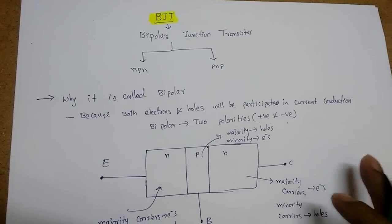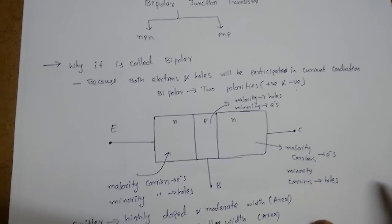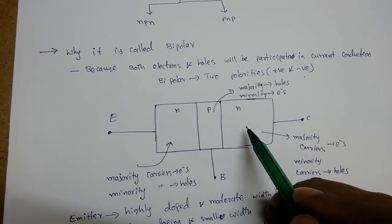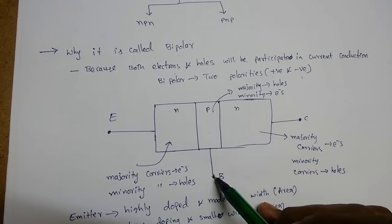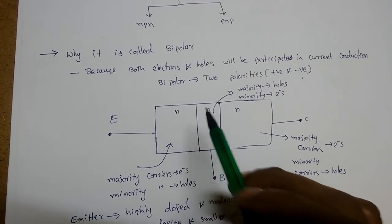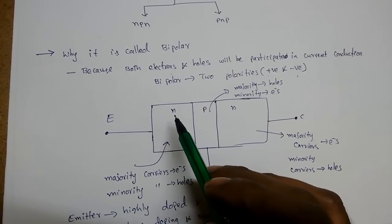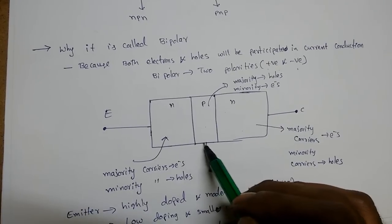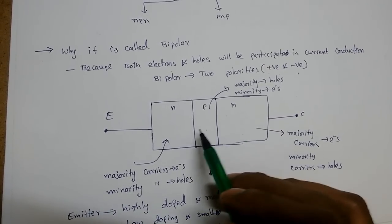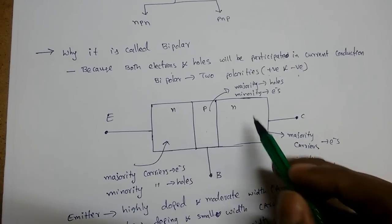There will be two junctions, but that is not the reason it is called bipolar junction transistor. Next, there are three regions: emitter, base, and collector, and there is a reason for each name. The emitter emits either electrons or holes — if it is PNP it emits holes, if NPN it emits electrons. The base acts like a channel, controlling how many electrons reach the collector. The collector collects either electrons or holes.